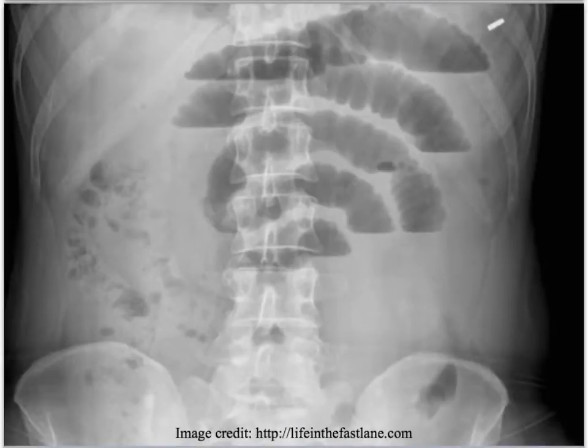In addition to free air, x-ray may also give us other clues as to the cause of the perforated viscous. In this case, we are able also to see dilated bowel loops from a bowel obstruction.